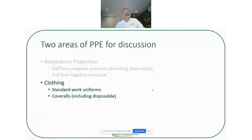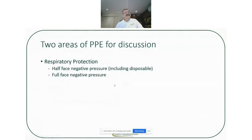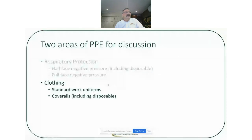Sorry about that. Now, two areas: respiratory protection — half-face negative pressure, including disposables. We'll also look at full-face negative pressure respirators. The other area we're going to dabble into is clothing — standard work uniforms and coveralls including disposables. So I'll try and cover each one of those.